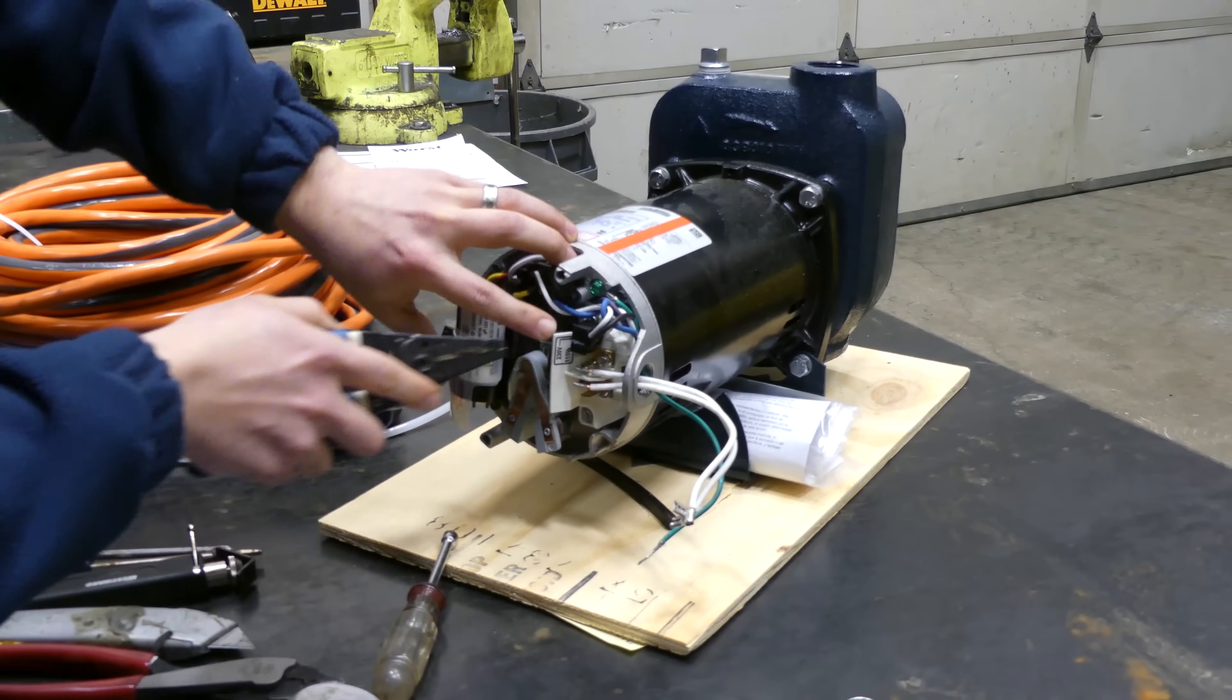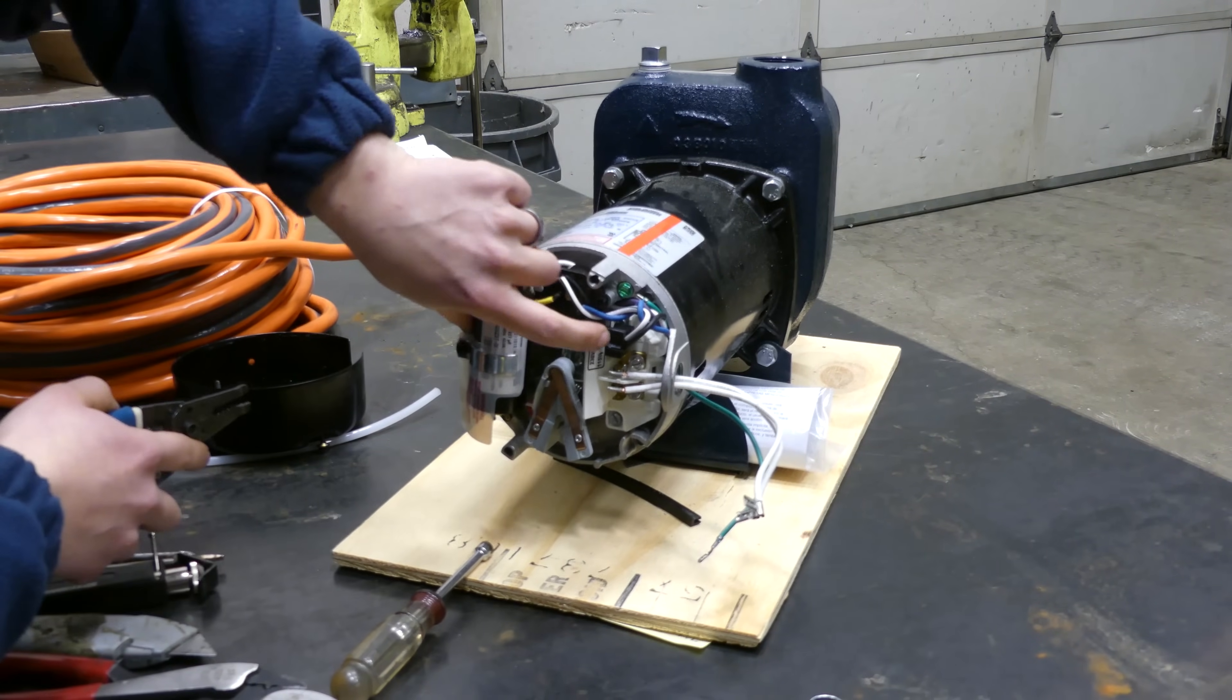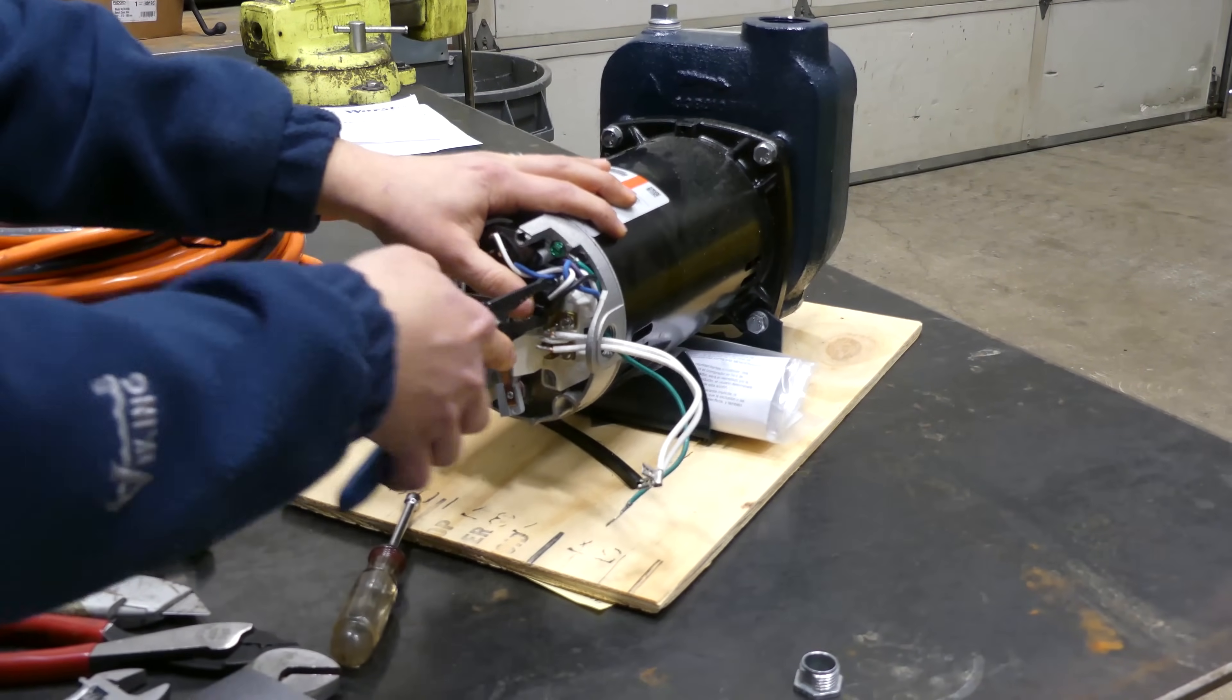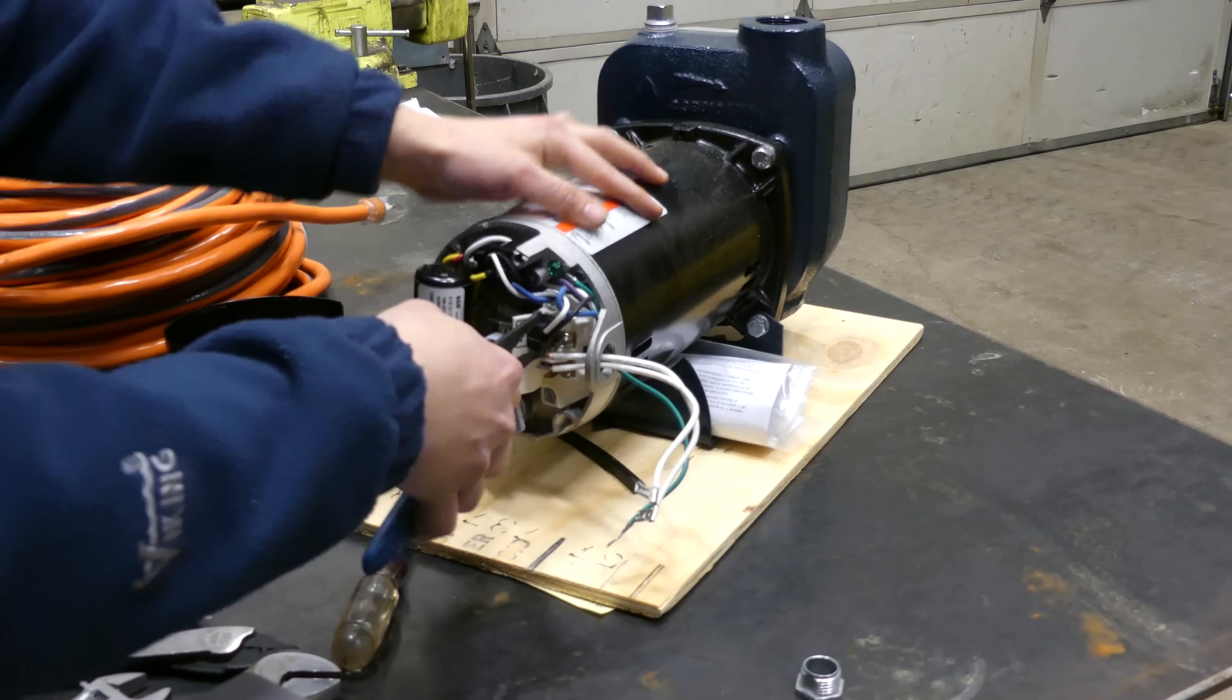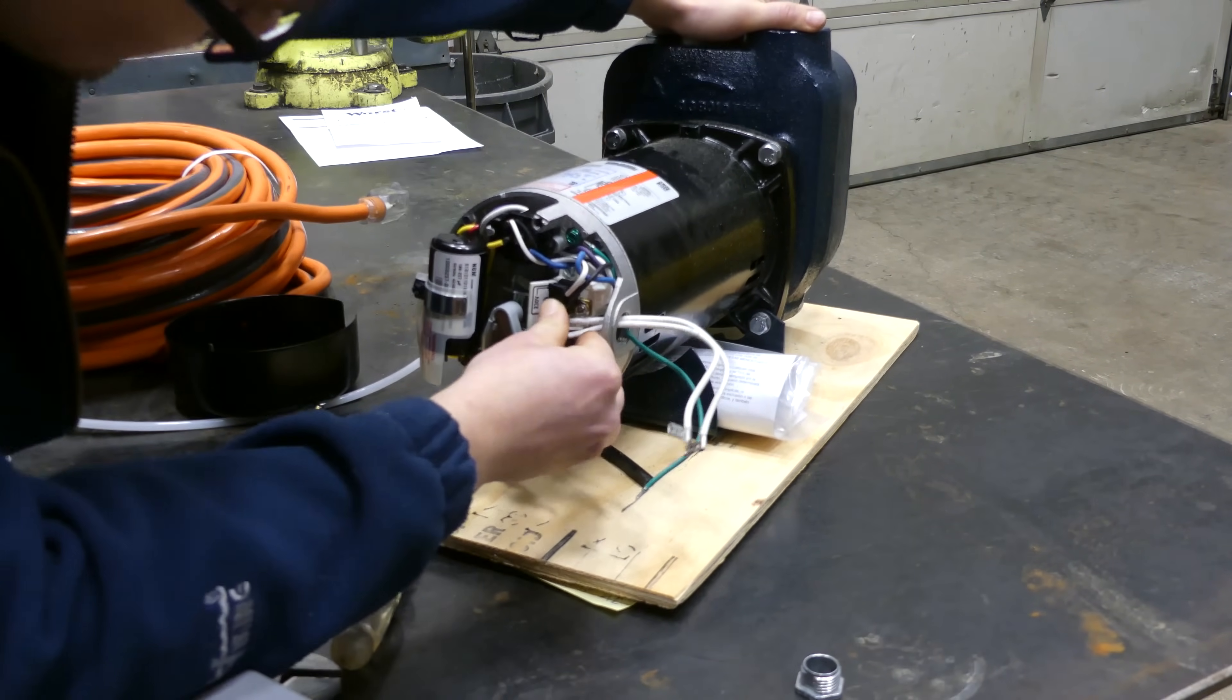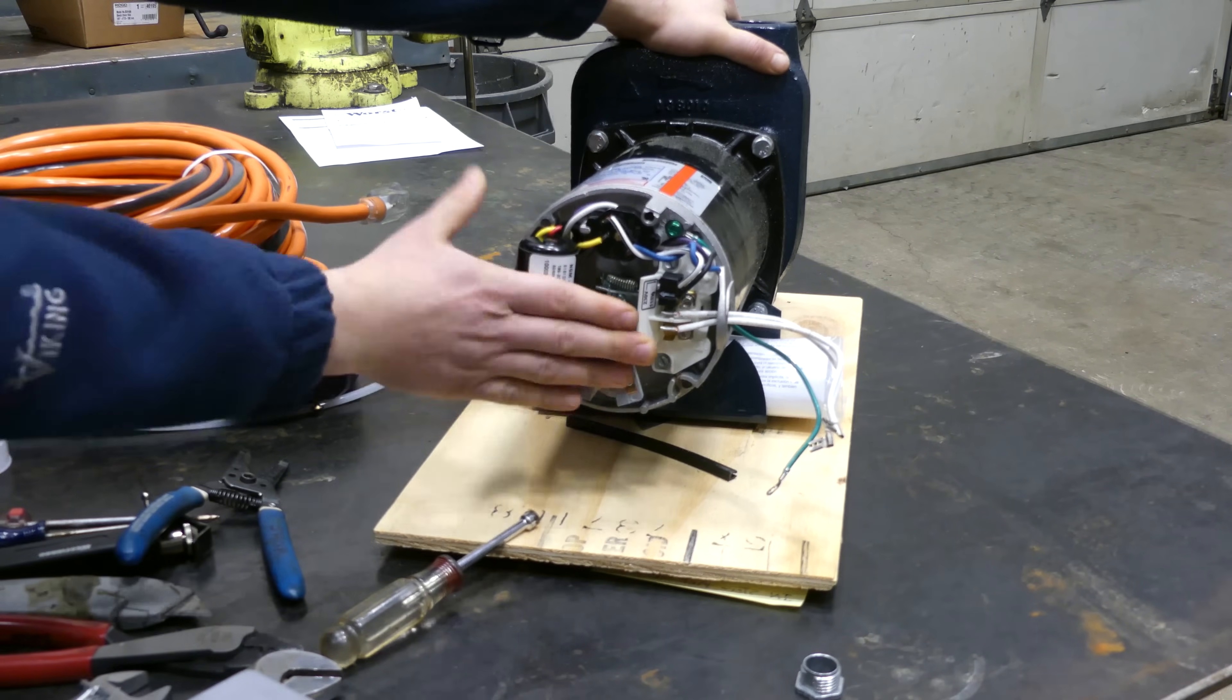Right now, you can tell there's a little white arrow that's pointing to the 230 volt here. So we need to move this to where the white arrow is pointing to 120 volt. So I'm just going to grab a hold of it here, tug it off, move it down, make sure we're lined up. It looks good. Push it all the way down. And that looks great. So now we know we're switched over to 120 volts.